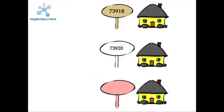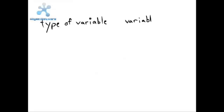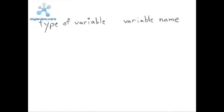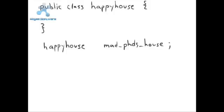A reference variable will contain the memory address where a particular object is located. A reference variable is declared like any other variable, except that the name of the class definition is used as its type. For example, a reference variable MadDoctor'sHouse could be declared to be of type HappyHouse, indicating that the variable MadDoctor'sHouse will contain the address of a HappyHouse object.